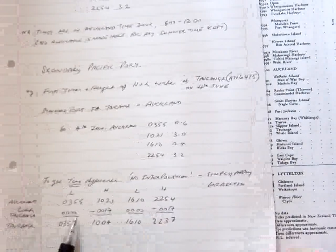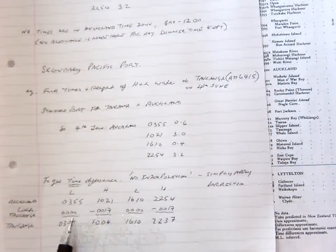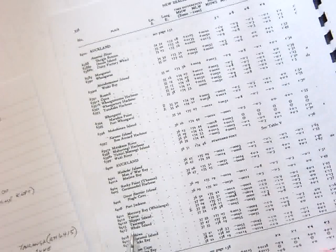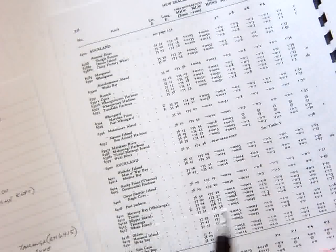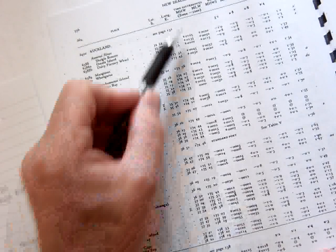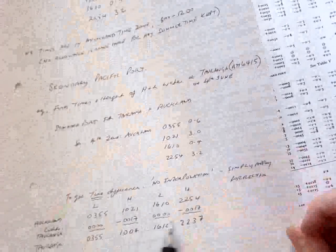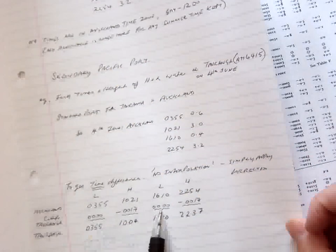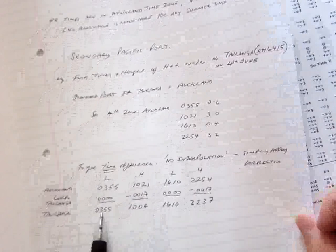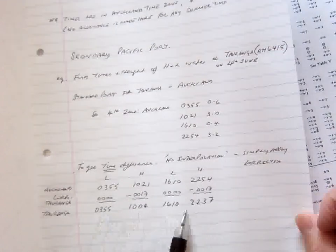We apply the corrections for low, high, low, high water for Turanga. And if you remember, let's just recap, going back to Turanga, we went in, the correction is 17 minutes for high, 0 for low. High and low written at the top. So we simply apply 17 minutes at the high water times, 0 at the low water. And then by calculation there, Turanga, we've got the times for low and high water for Turanga.